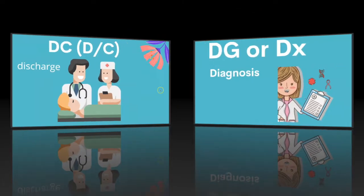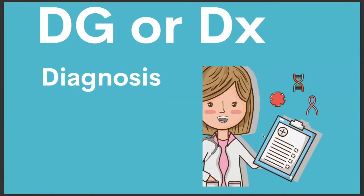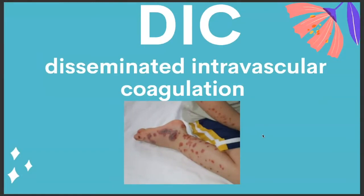DC is discharge. DG or DX is diagnosis. DIC is disseminated intravascular coagulation. A lot of times this occurs due to some kind of trauma or infection. The body at first hypercoagulates and then uses up all its clotting factors, and then it cannot clot, and basically these individuals bleed out.